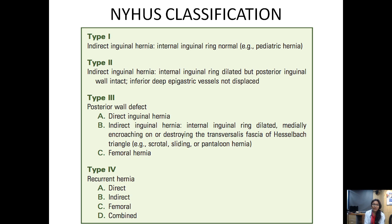In Nyhus classification, type 1 is an indirect inguinal hernia with a normal or patent internal inguinal ring — for example, a pediatric hernia. Type 2 is an indirect inguinal hernia where the internal inguinal ring is dilated but the posterior wall is intact and the deep epigastric vessels are not displaced. Type 3 involves a posterior wall defect with three subtypes: A is a direct hernia, B is an indirect hernia with a dilated internal inguinal ring in addition to a posterior wall defect, and C is a femoral hernia. Type 4 stands for all recurrent hernias — A, B, C, D standing for direct, indirect, femoral, and combined respectively.